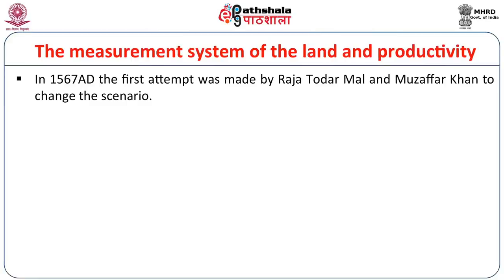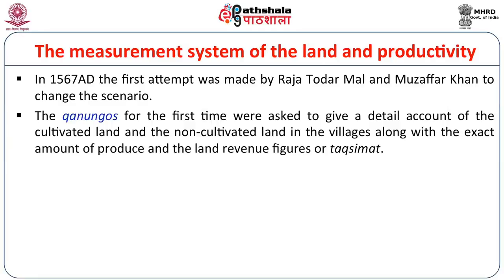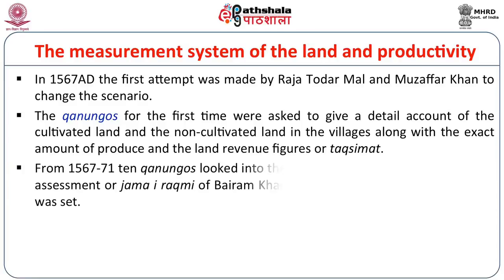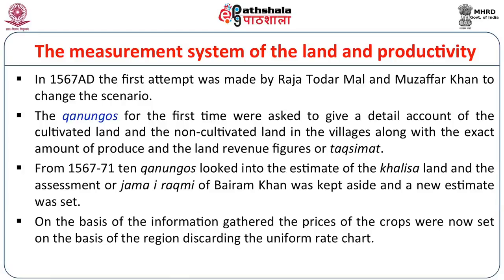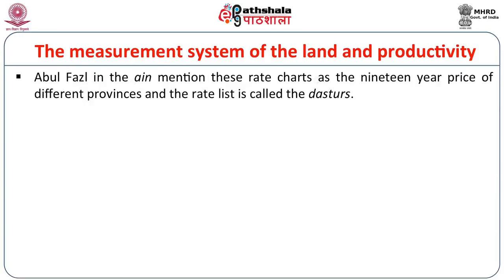The second attempt was taken by Raja Todarmal and Muzaffar Khan to change the scenario. The Kanungos were for the first time asked to give a detailed account of the cultivated land and non-cultivated land in the villages, along with the exact amount of produce and the land revenue figures, known as Taksimat. In 1567 to 1571, ten Kanungos looked after the estimate of the Khalisa land, and the assessment of Jama or Jama-e-Rakmi of Bahram Khan was kept aside and a new estimate was set. On the basis of the information gathered, the prices of crops were set on the basis of a region-wise uniform rate chart.